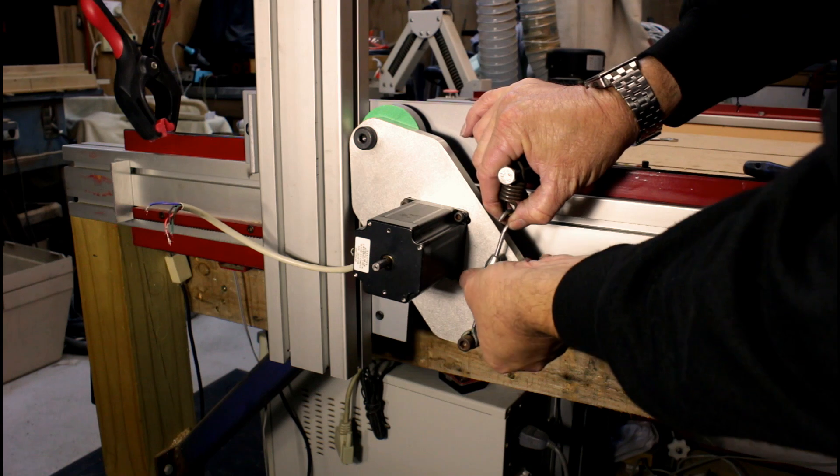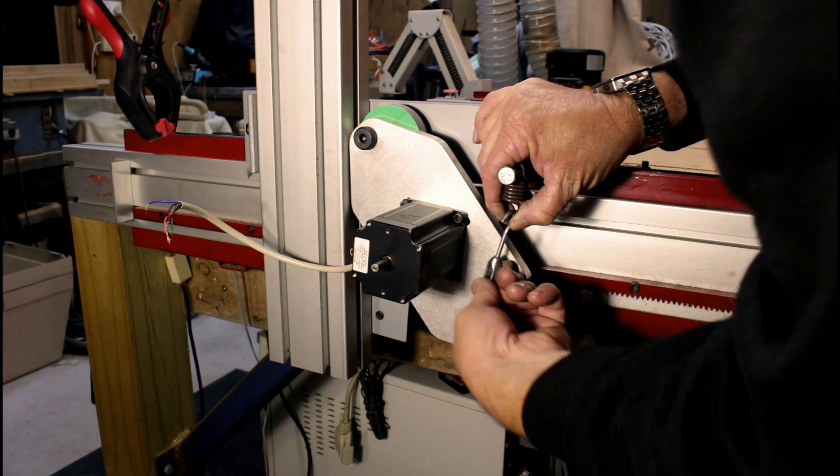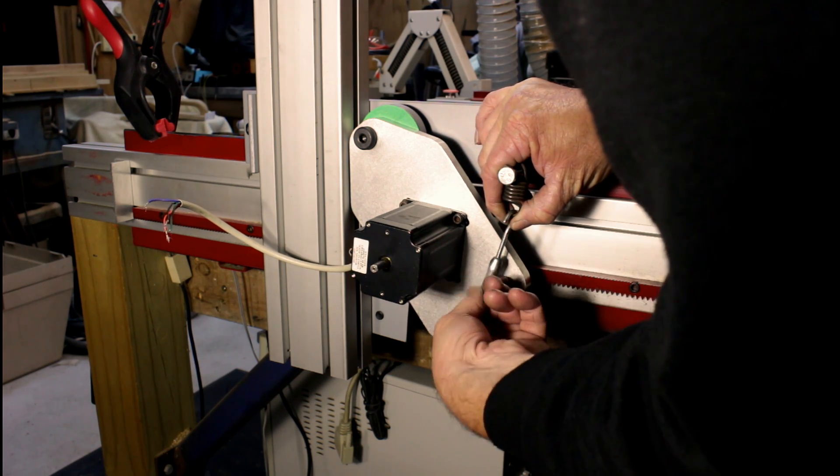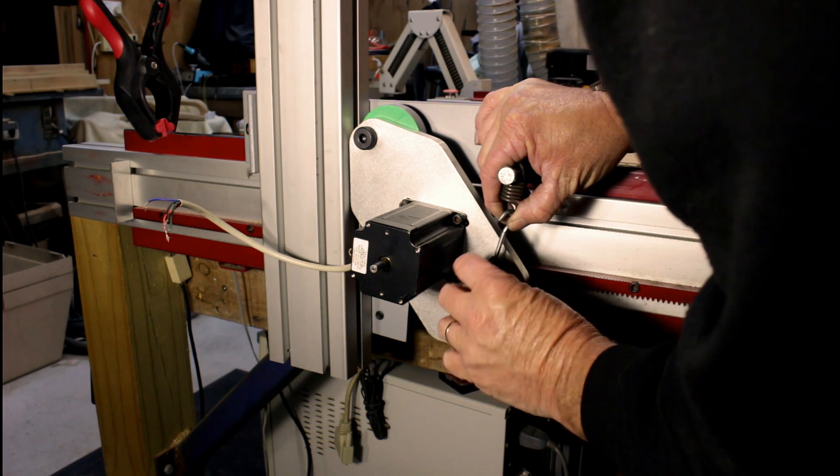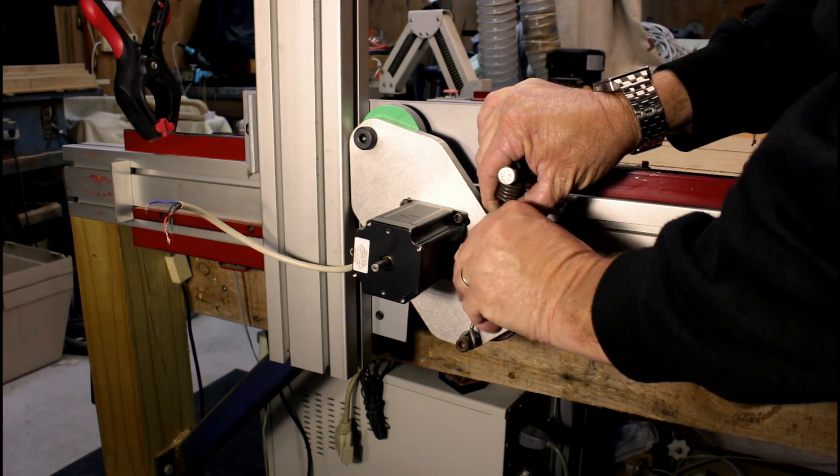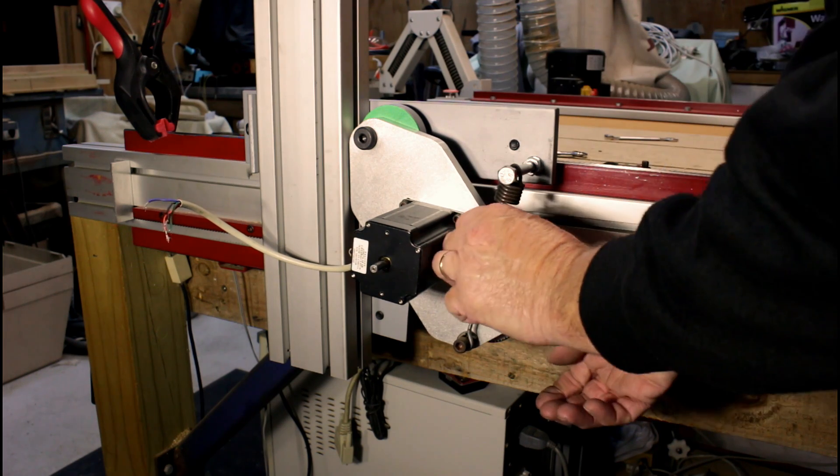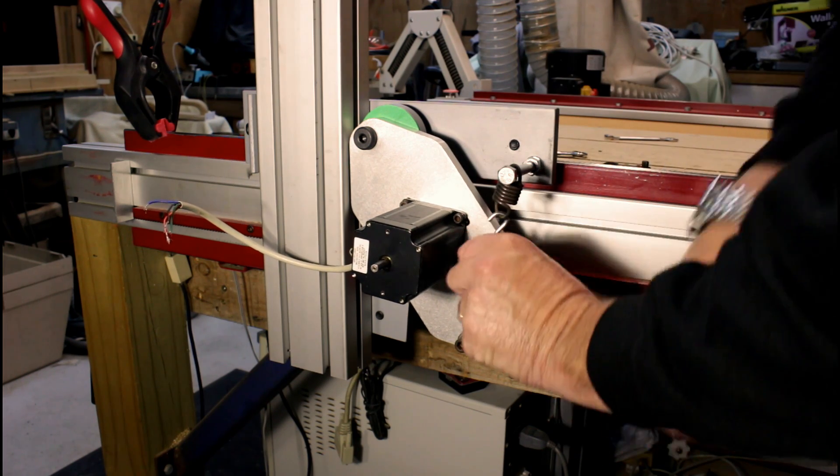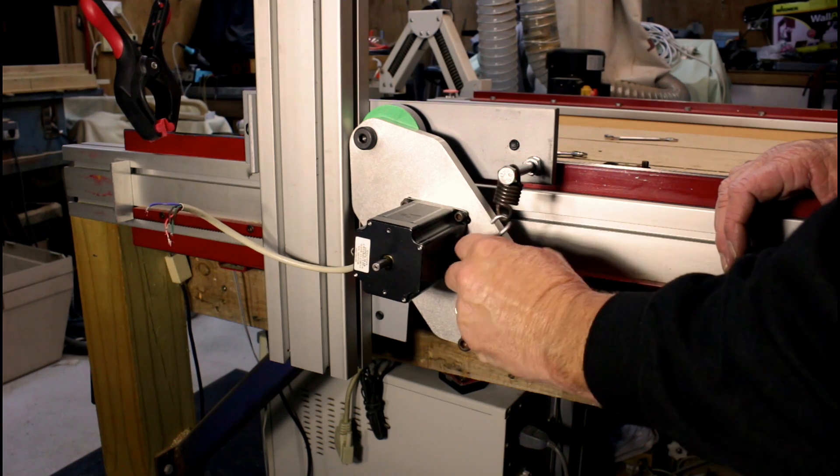With that done, the turnbuckle can now be adjusted to engage the pinion with the rack. At this point in time, I'm not over-tightening it. I just want it to nicely engage with it, and no more. If it's too tight, I'm going to have problems with the next adjustment.